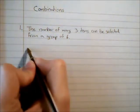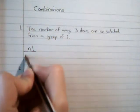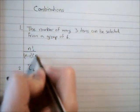There's a formula we can use to calculate this and that formula is n factorial over n minus r factorial r factorial.